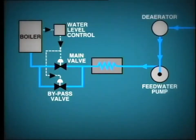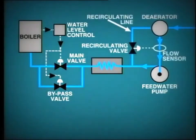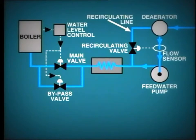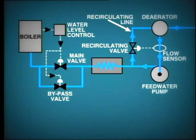In order to prevent this problem, a recirculating line is fitted to the pump discharge. In the event that the feedwater flow through the pump falls below a preset minimum, the recirculating valve opens automatically and passes water directly back to the deaerator, thus maintaining the pump in a safe operating condition.